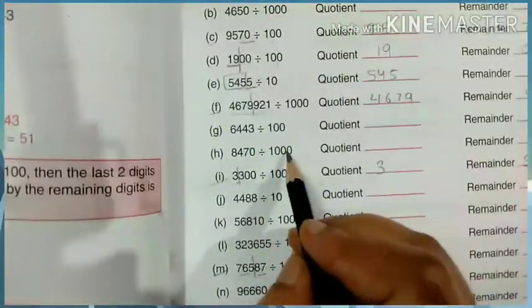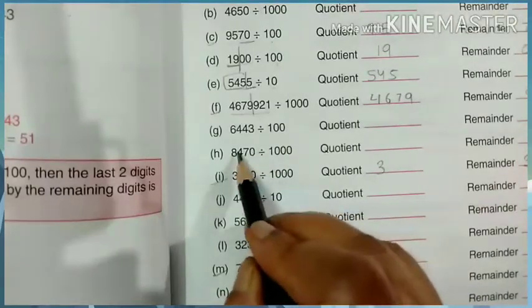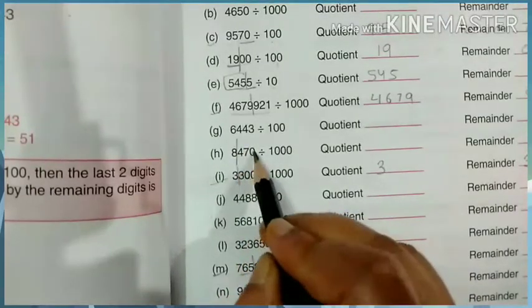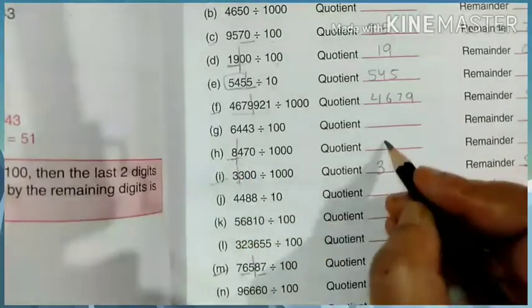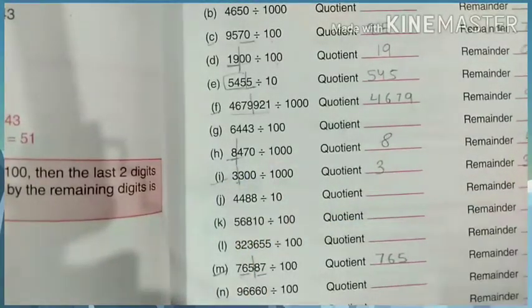Let's look at 1000. How many zeros are there? One, two, three. After three zeros, we will put a line. After three right sides, we will put a line. How many times are there? Eight. How many times are there? 470. It's that much easy.